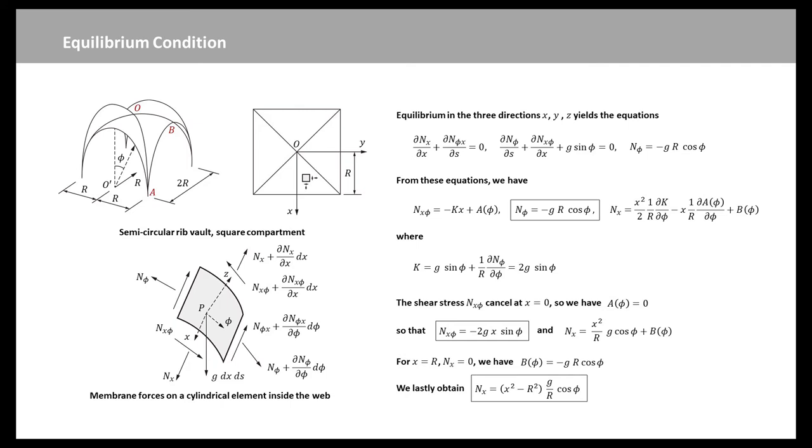We can see that the membrane solution is statically determinate, and it depends only on the unit weight and the dimensions of the shell. The hoop stress resultant N_phi at phi equals 0, so that it has the value negative g times R. The only shell forces acting at the cut will be the uniform hoop compression of value g times R per unit length.